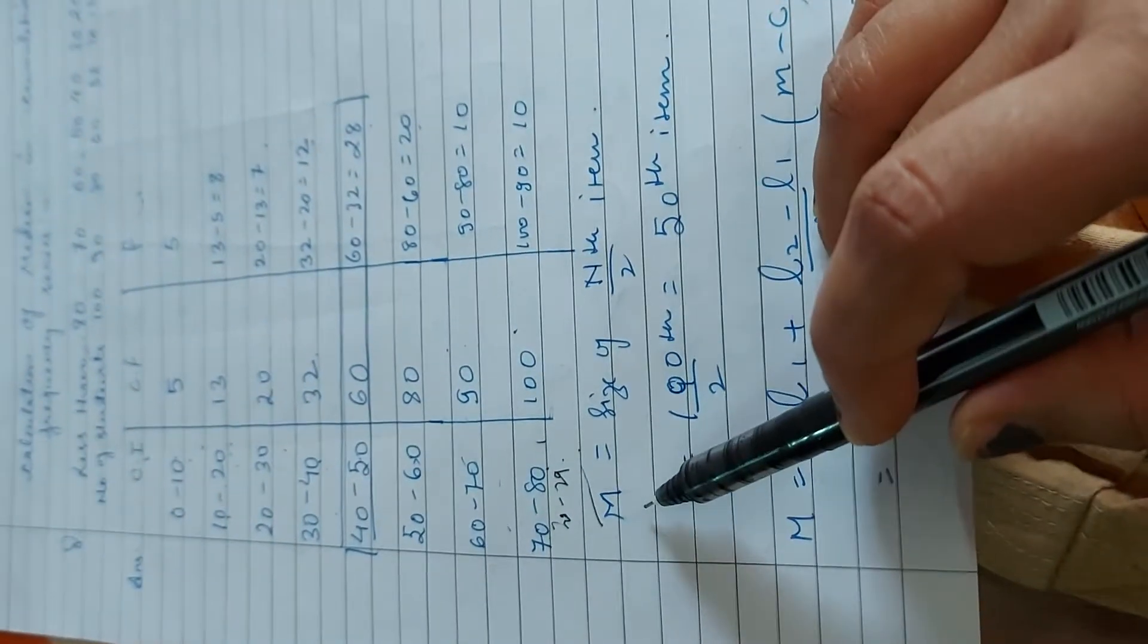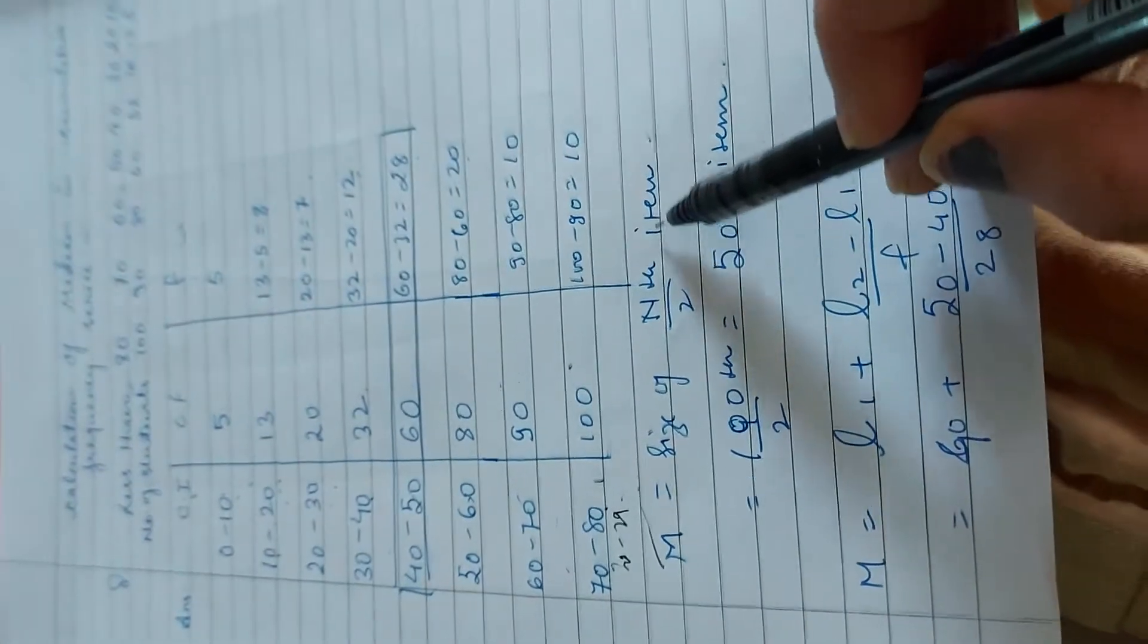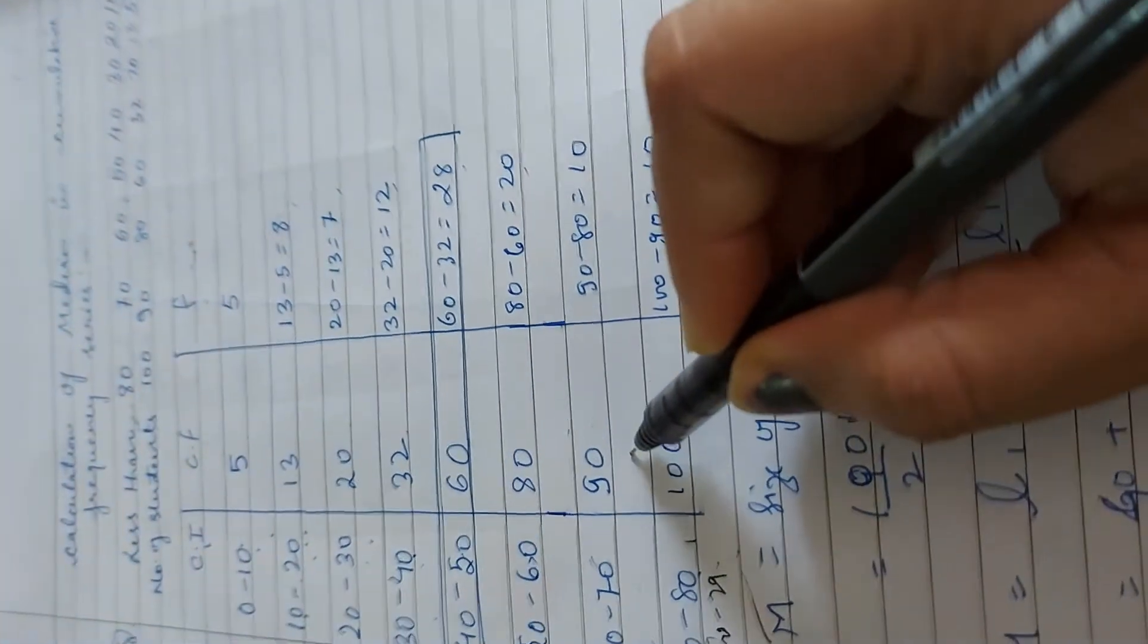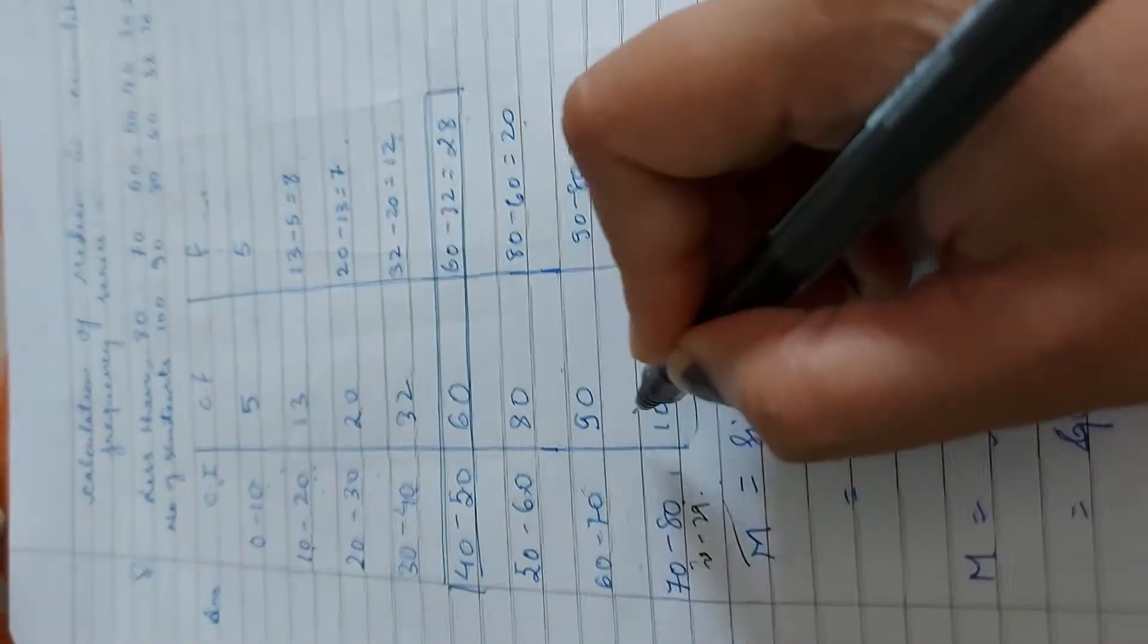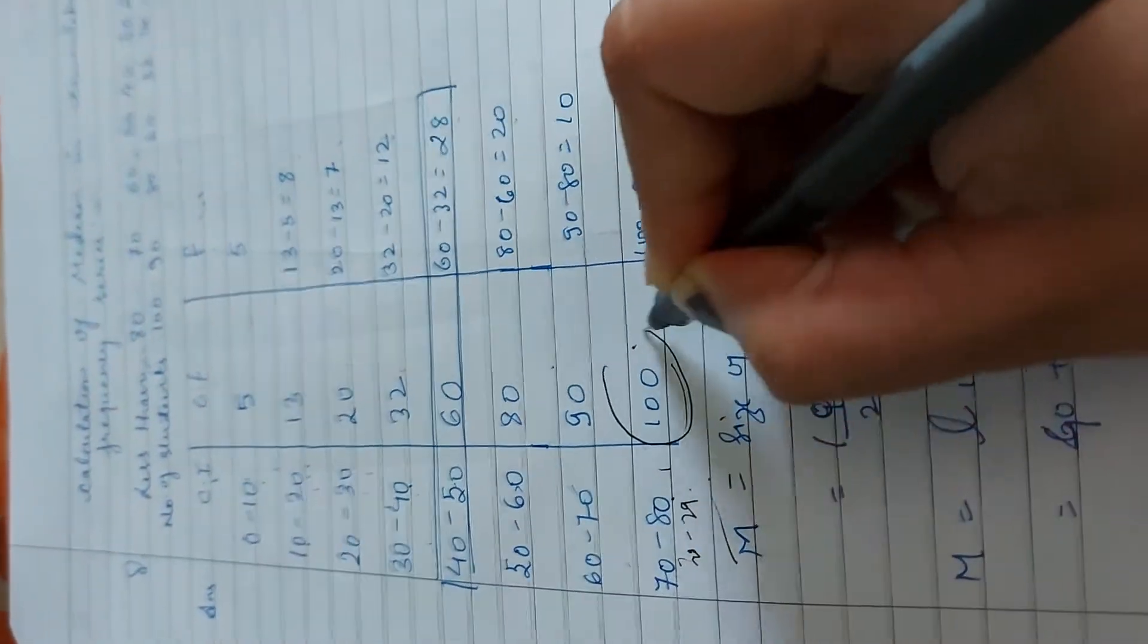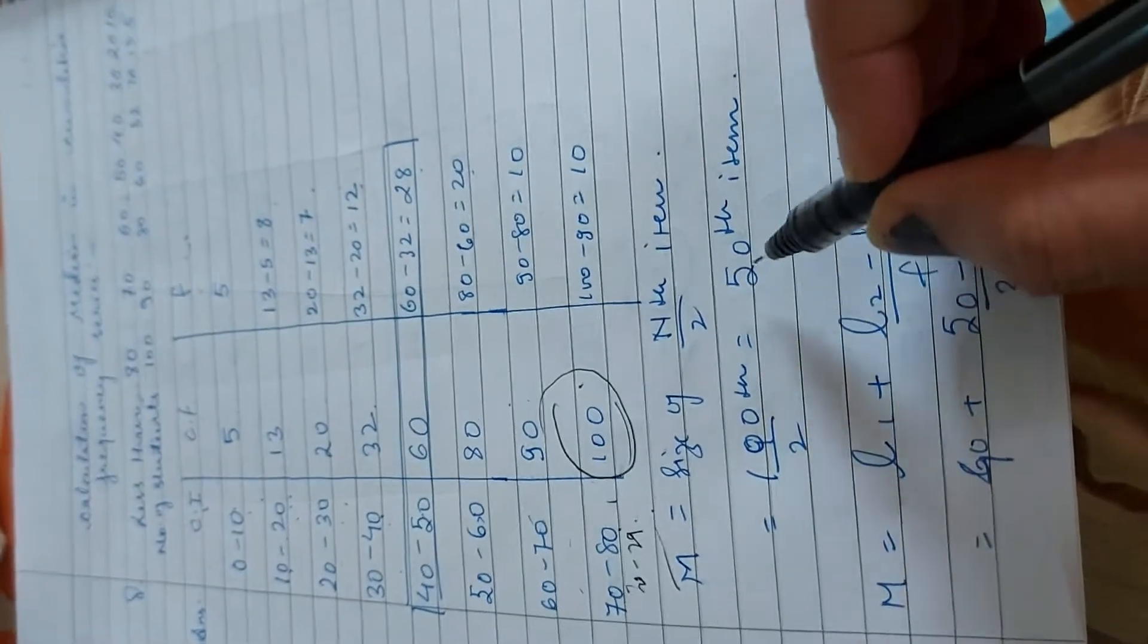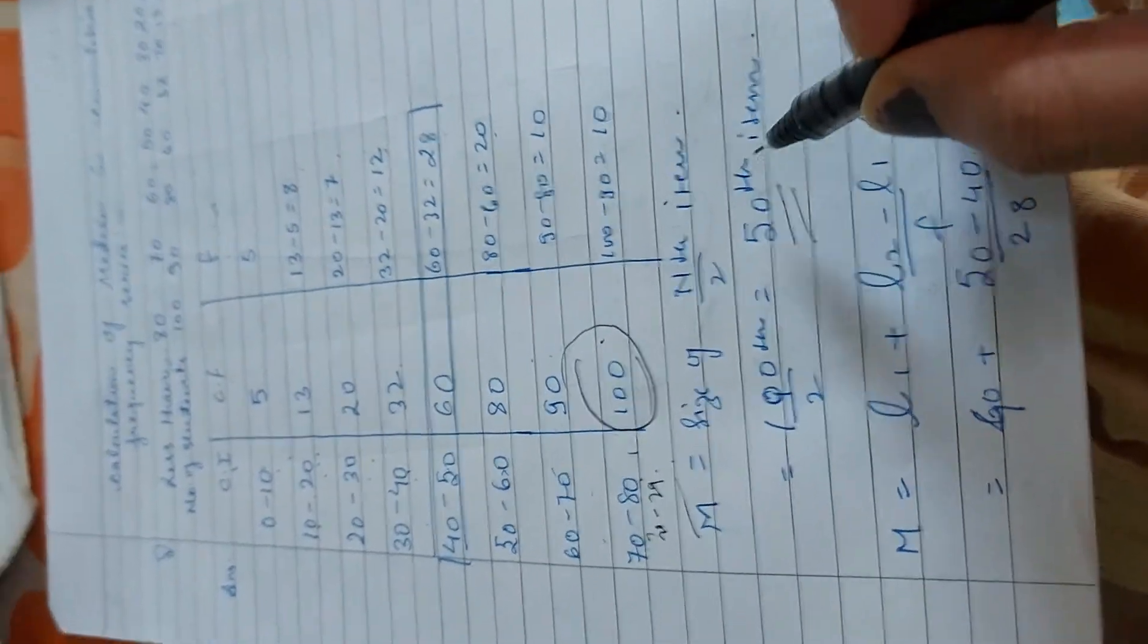Now, let's go to our calculation. M is equal to size of n by 2th item. So our size is what is? Size is 100, 100 by 2th, that is 50th.